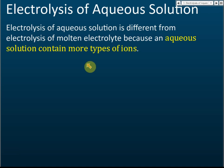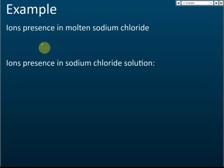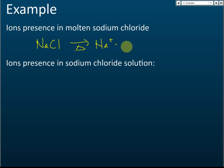Electrolysis of aqueous solutions is different from electrolysis of molten electrolytes because an aqueous solution contains more types of ions. For example, in molten sodium chloride, the ions present are only sodium ions and chloride ions — there are no hydrogen or hydroxide ions.